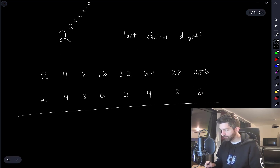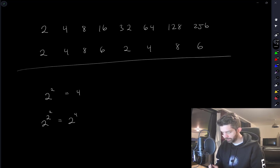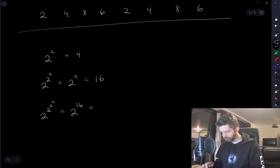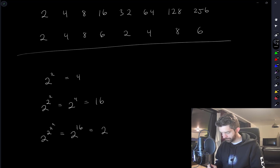As usual, I like to work this out for small cases. So 2 to the 2 is equal to 4. Then 2 to the 2 to the 2 is equal to 2 to the 4, which is 16. And the next level is going to be 2 to the 16, then 2 to the 4 to the power 4, which is 16 to the power 4.